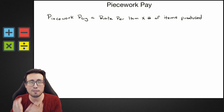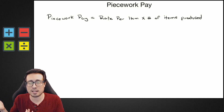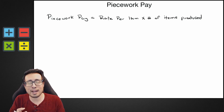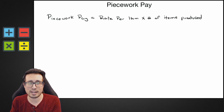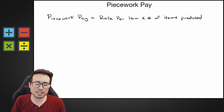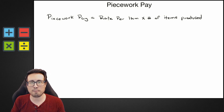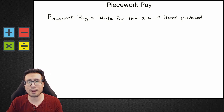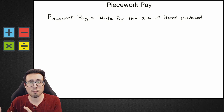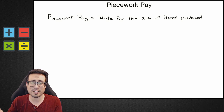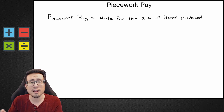This could be a service. Maybe I fix ceiling fans and I get $10 per ceiling fan — I would be multiplying it times the number of ceiling fans that I fixed. This is how you calculate piecework pay, and you can see that the more you produce, the more money you'll make. It doesn't matter how many hours you're putting in; what matters is how much you're producing.